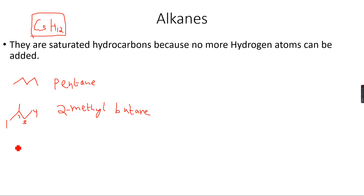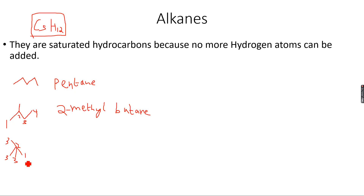Now we can make more isomers. If I start numbering this next structure, the longest chain I end up getting is 3 carbon atoms regardless of which route I take, and in any case there are 2 methyl groups on the second carbon atom. So this becomes 2,2-dimethylpropane.